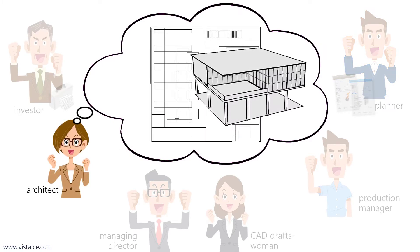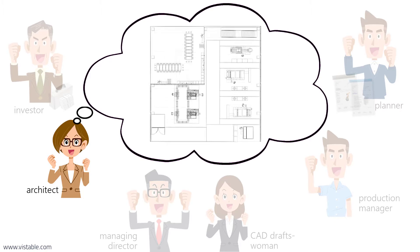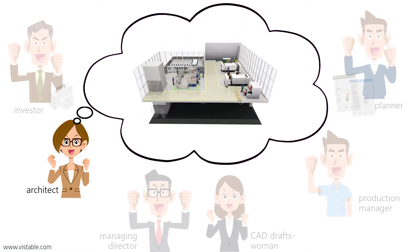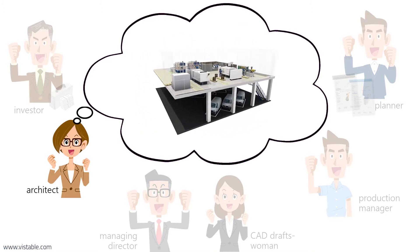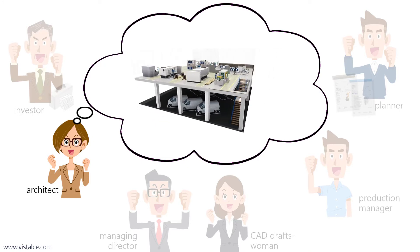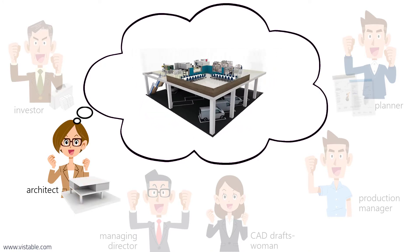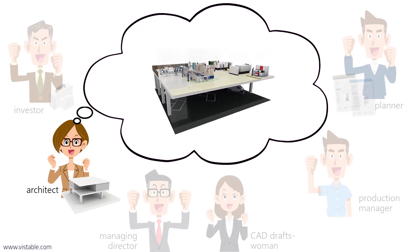The architect has a modern and functional building in mind. She is not so well acquainted with production and logistics technology. In her opinion, a roof terrace is best suited as a break room. She also believes she has understood that the space for the extension should continue to be used as a parking lot, which she thinks makes a lot of sense. On this basis, the architect thinks up a building concept and creates a simple cardboard model for the next meeting.